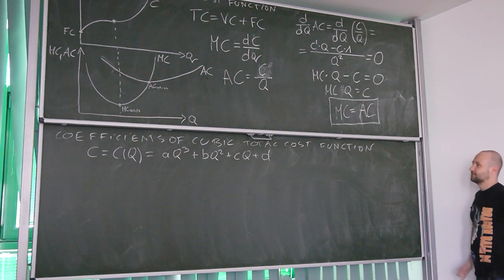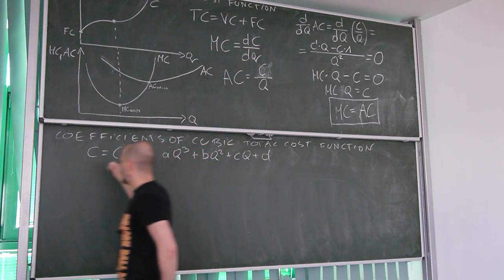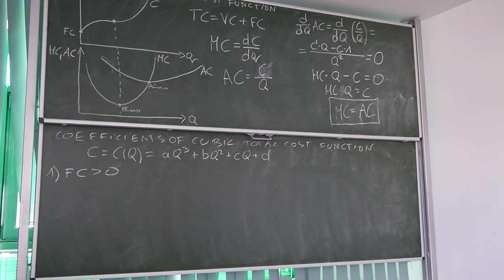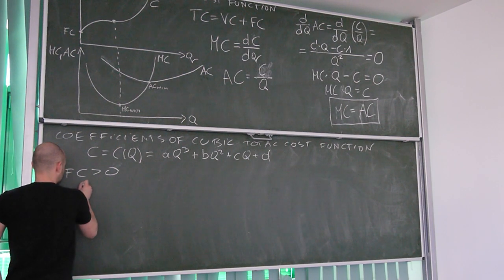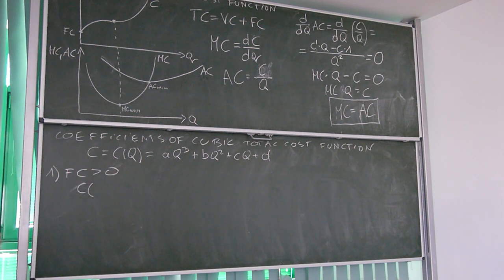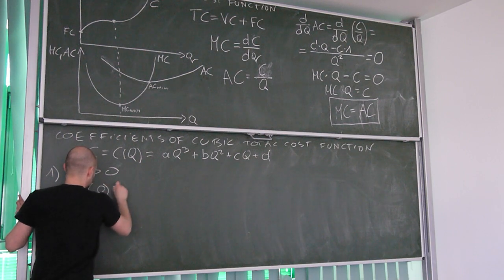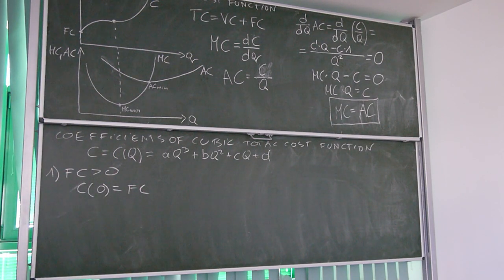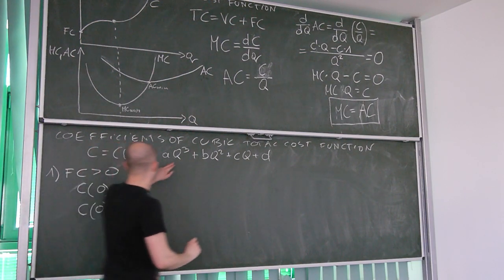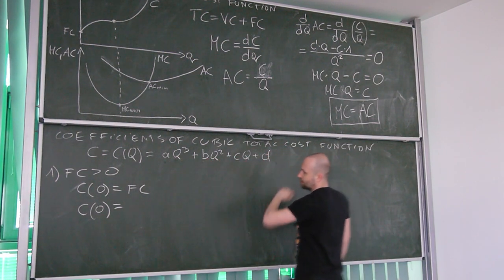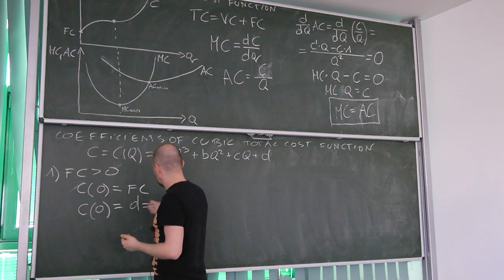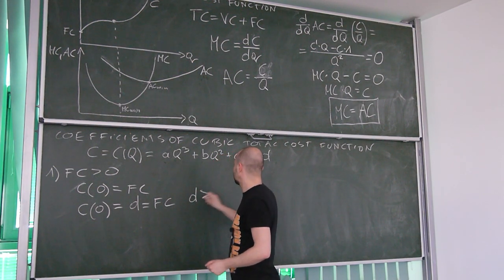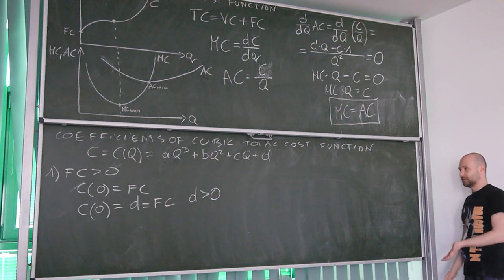Now let's talk about all the requirements. First, fixed cost must be positive. Fixed cost for any total cost function is the cost when the level of production equals zero. If we substitute zero for q, all terms with q vanish and we get d. So d is the fixed cost, and our first restriction is that d must be positive.